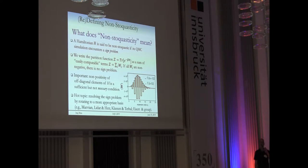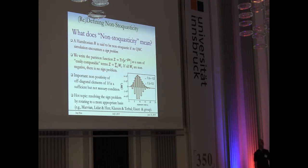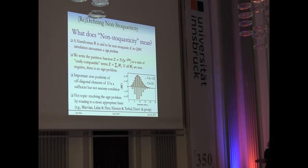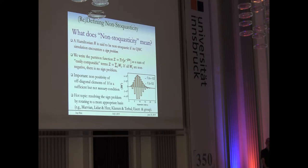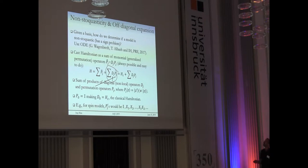It's important to understand that the standard definition of stoquasticity — non-positivity of off-diagonal elements of the Hamiltonian — is a sufficient condition for not having a sign problem, but the converse is not necessarily true. There's a lot of work these days by USC, Classen, Terhal, and the Iserlis group about resolving the sign problem in different ways, such as rotating the basis, which removes or negates off-diagonal elements.